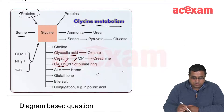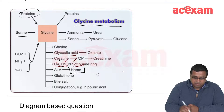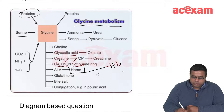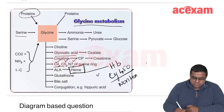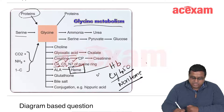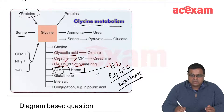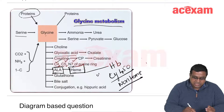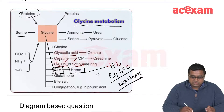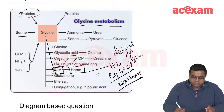Another important product from glycine is heme — a component of hemoglobin and cytochrome P450 and other non-heme proteins. For heme formation, ALA (aminolevulinic acid) is produced, and for ALA formation, glycine is necessary. So glycine is a precursor for heme synthesis.